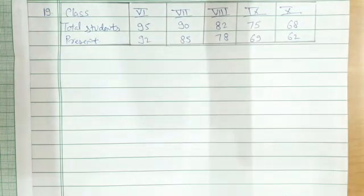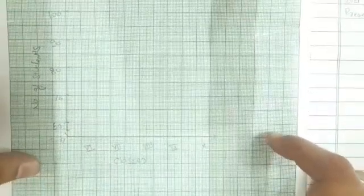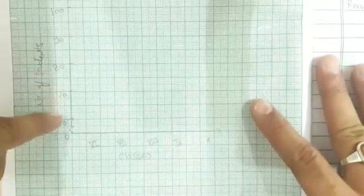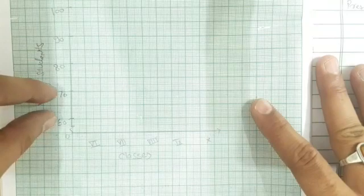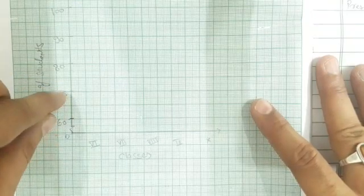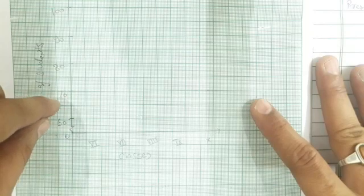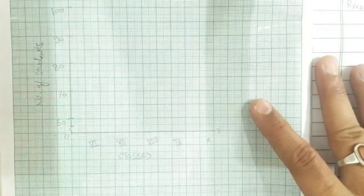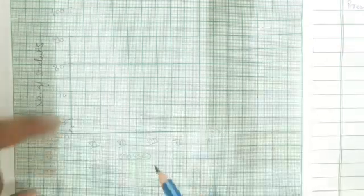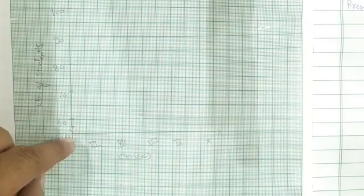The height we will decide according to the given data. On the y-axis I have taken number of students, while on the x-axis I have taken classes. I have kept a gap of 1 unit between each class. The scale I have taken is 2 units equals 10 students, meaning there are total 20 divisions between 60 and 70, and 20 divisions will represent 10 students.